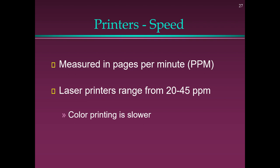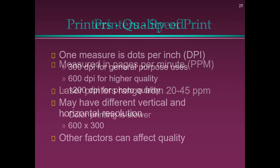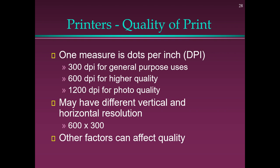Printer Speed: Measured in pages per minute (PPM). Laser printers range from 20 to 45 PPM; color printing is slower. Printer Quality: Measured in dots per inch (DPI) — 300 DPI for general purpose, 600 DPI for higher quality, 1200 DPI for photo quality. May have different vertical and horizontal resolution, such as 600×300. Other factors can also affect quality.